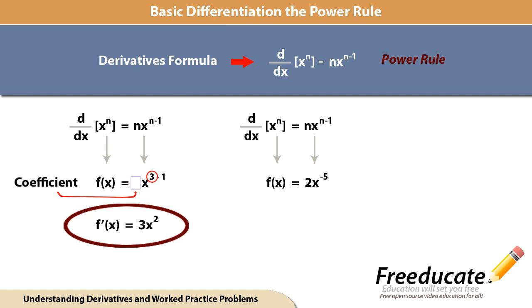Again, very simple concept. We have our negative five—we're going to take that and multiply it by our coefficient of two. Negative five multiplied by two gives us negative ten. Now we subtract one off the original exponent. A negative five minus a negative one gives us negative six. So our completed answer is negative ten x to the negative sixth.